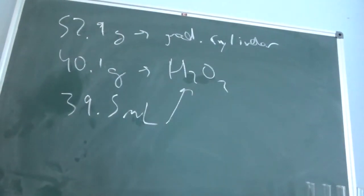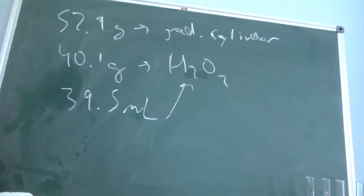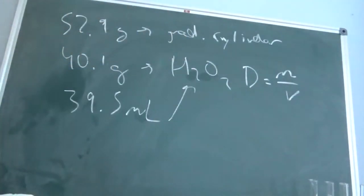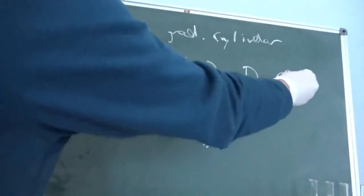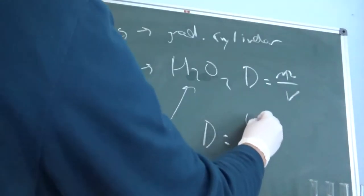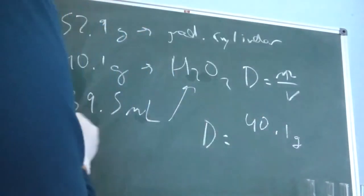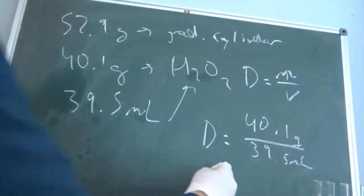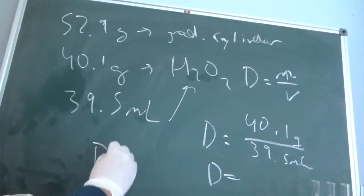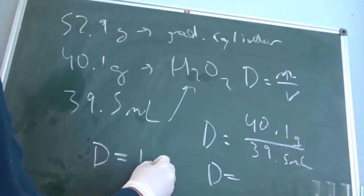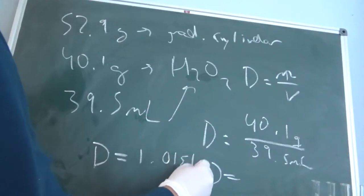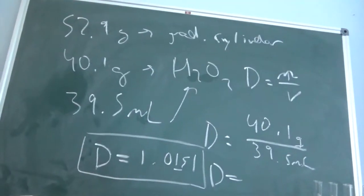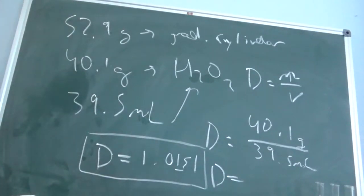All right, so we have 52.9 grams, which is our graduated cylinder, so that doesn't really matter. So now we can do the math. So let's find density. Density equals mass divided by volume. That's pretty common knowledge. So our mass is 40.1 grams and our volume is 39.5 milliliters. Oh wow, I should really clean this area. Which is our density. I'll just write over here actually. Density will equal 1.0151.